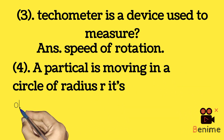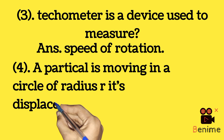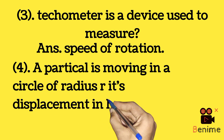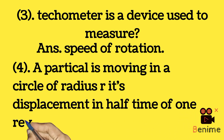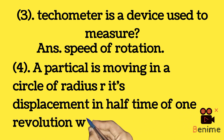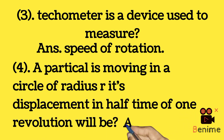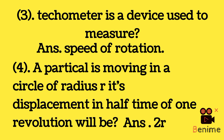A particle moving in a circle of radius r — its displacement in half the time of one revolution will be — answer: 2r.